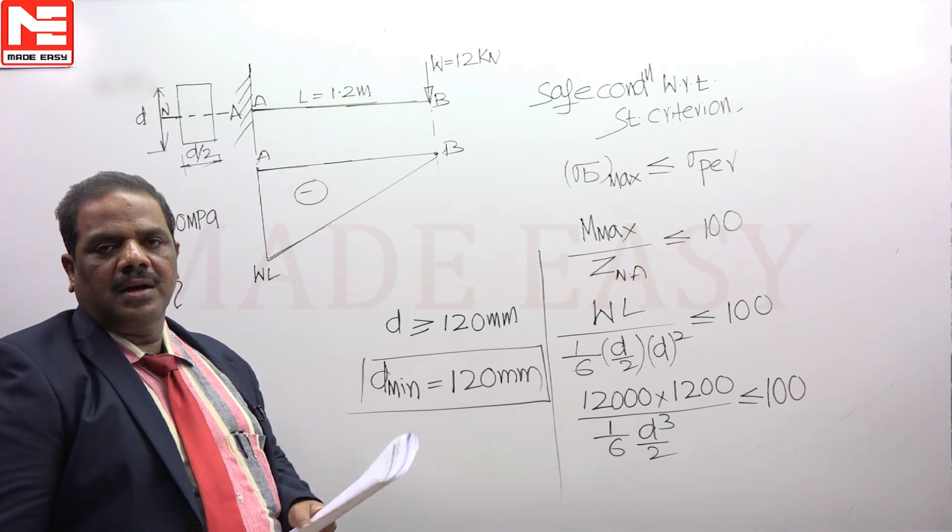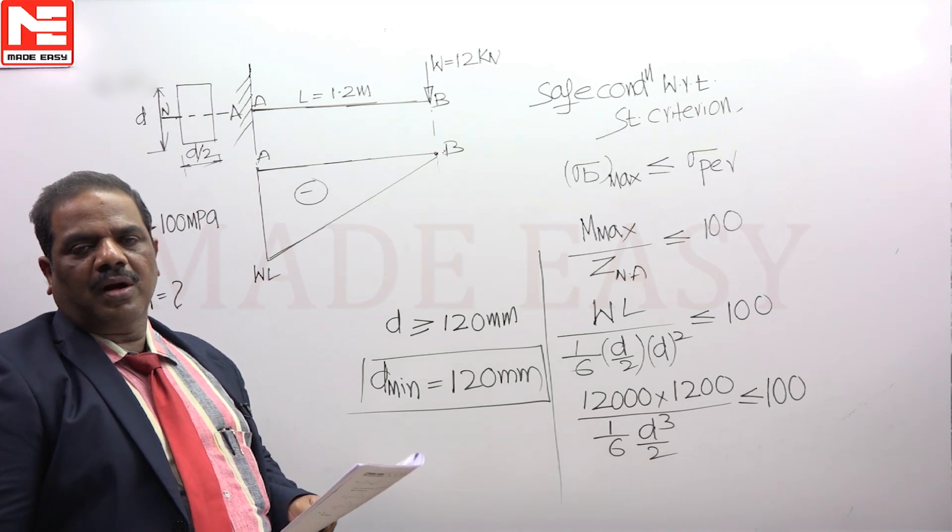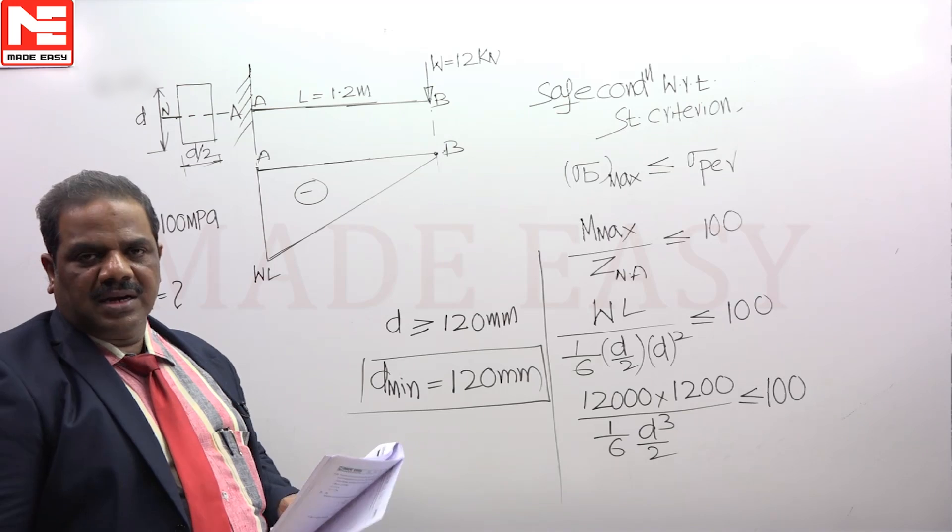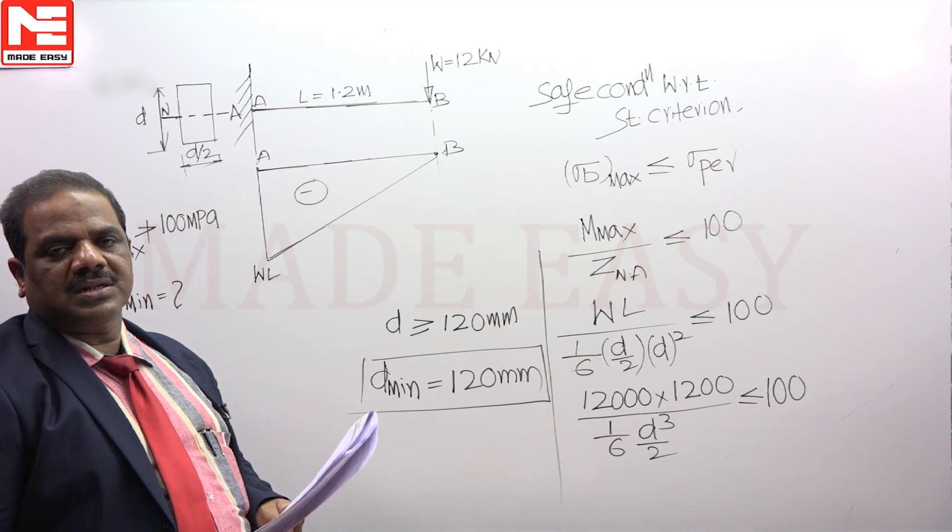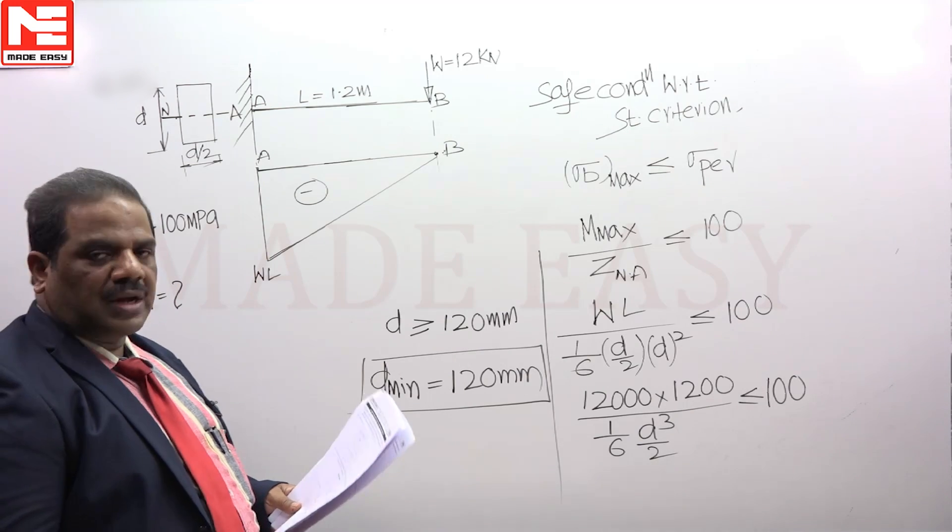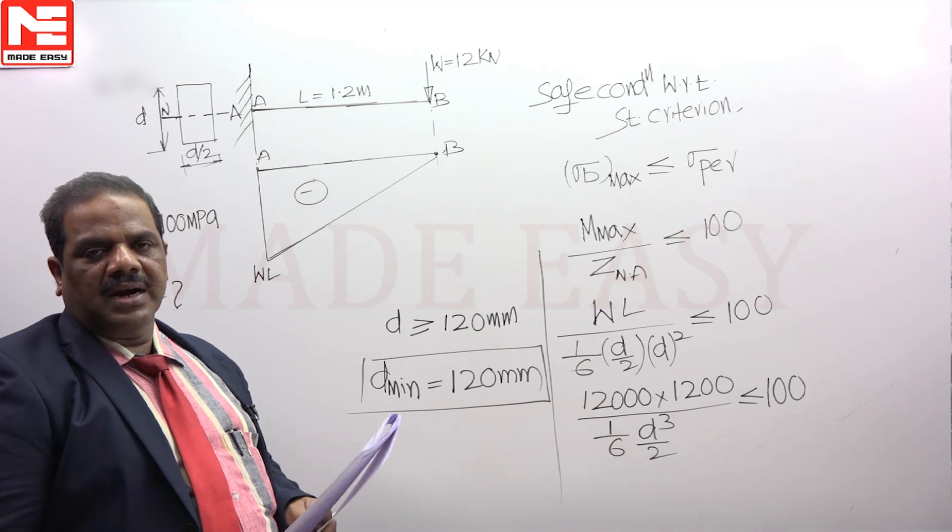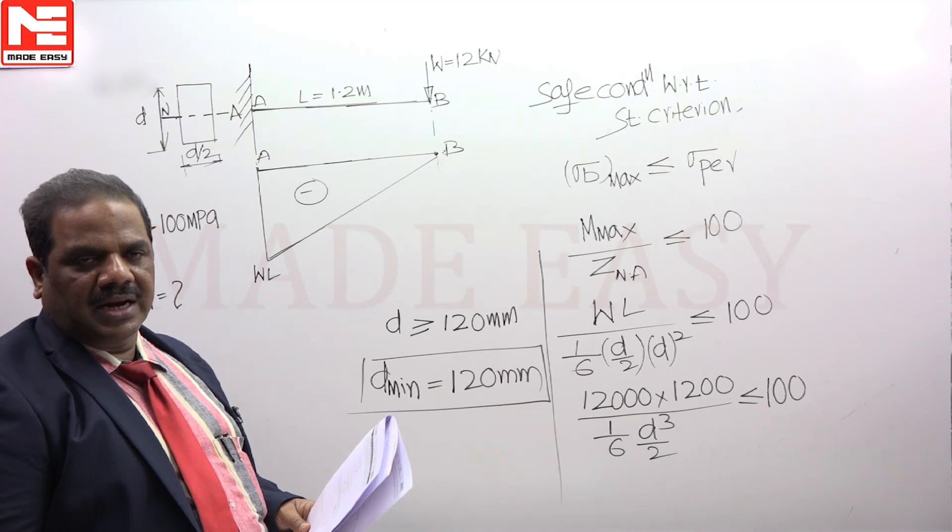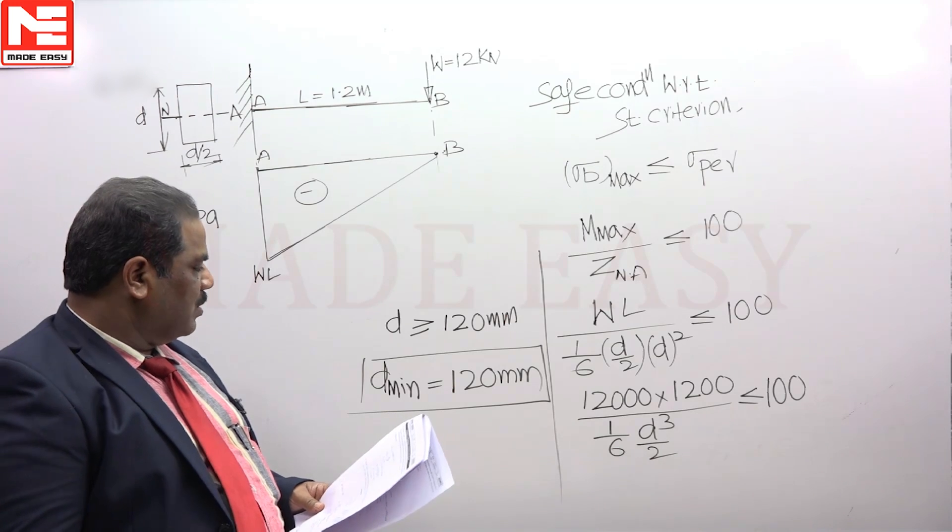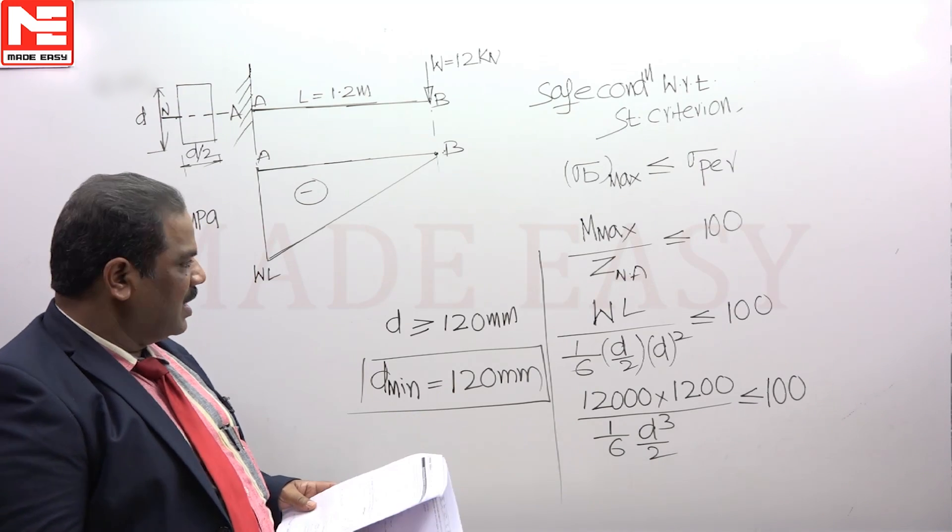One point should be noted that extreme fibers of the beam are always subjected to uniaxial state of stress. There is no shear stress, only bending stress, so you can directly use the strength criterion, which is valid for the uniaxial state of stress. For the given question, the answer will be 120 mm.